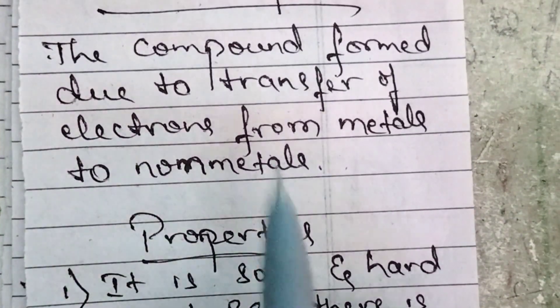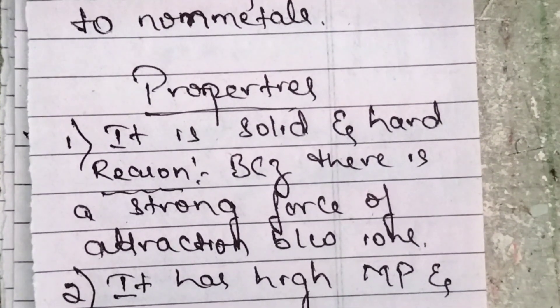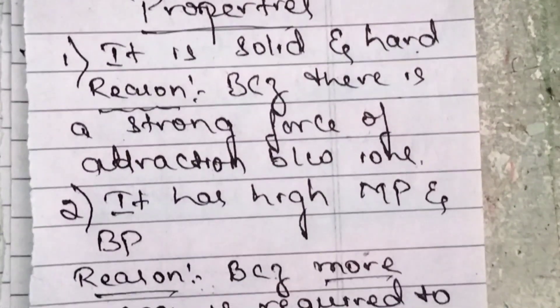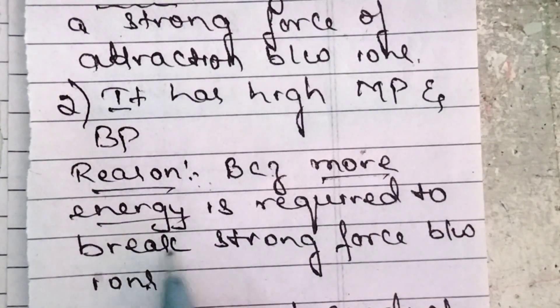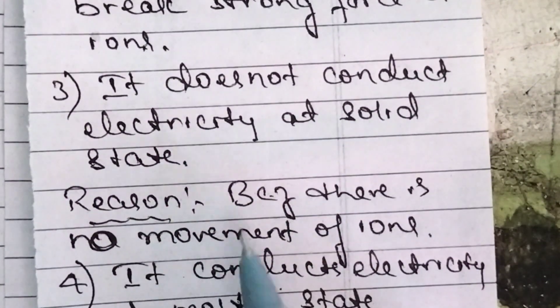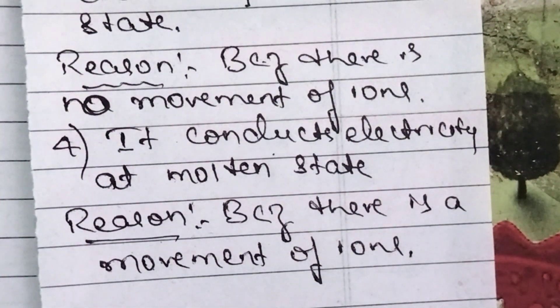So these are the four properties of ionic compounds with their reasons. What are ionic compounds? The compound formed due to transfer of electrons from metals to non-metals. Properties: it is solid and hard because of strong force of attraction between ions; high MP and BP because more energy is required to break strong force between ions; does not conduct electricity at solid state because there is no movement of ions; conducts electricity at molten state because there is movement of ions. Thank you for watching my YouTube channel.